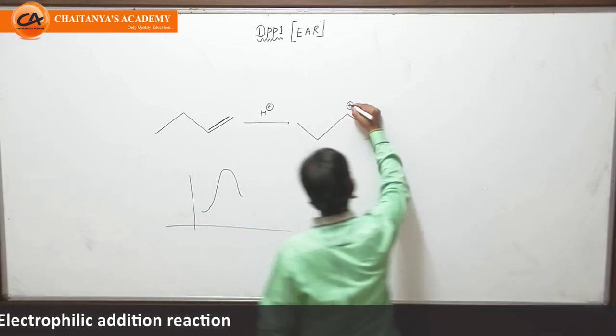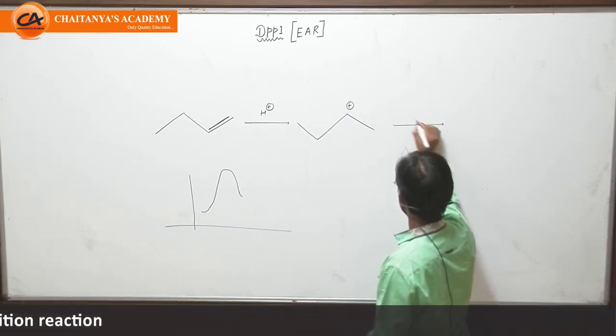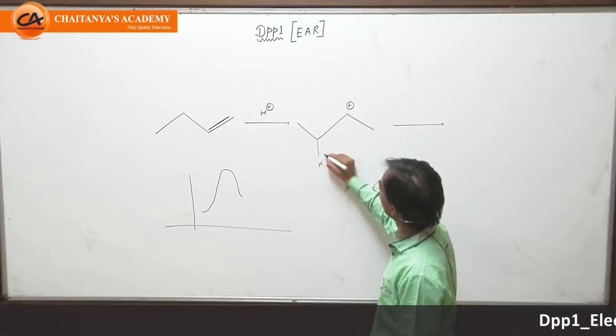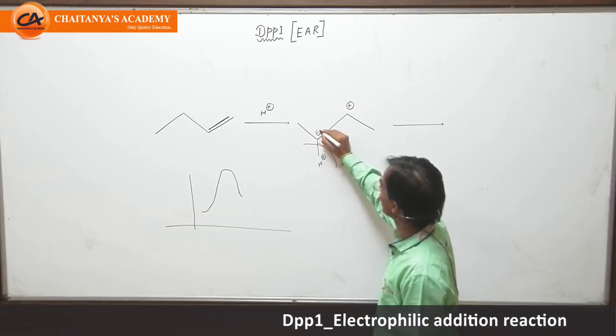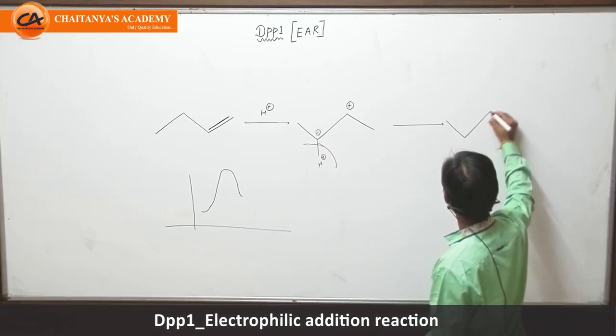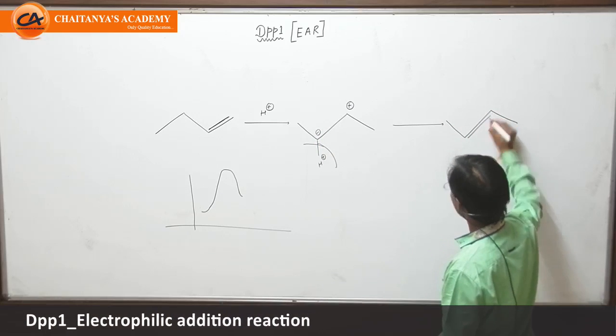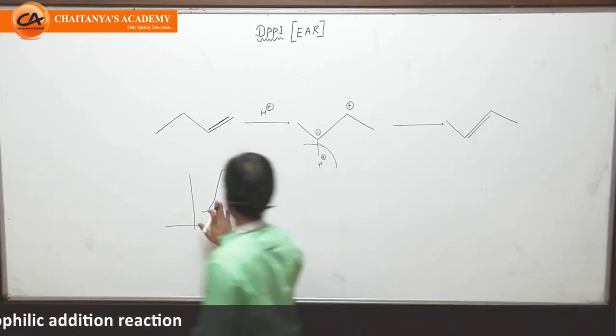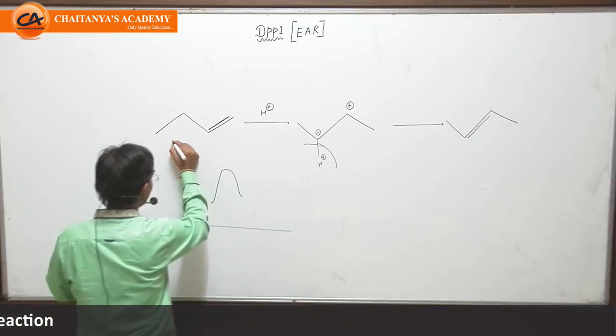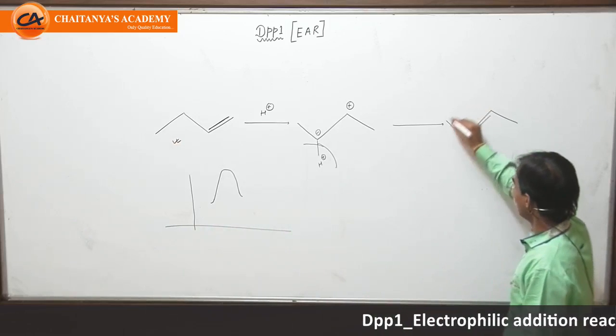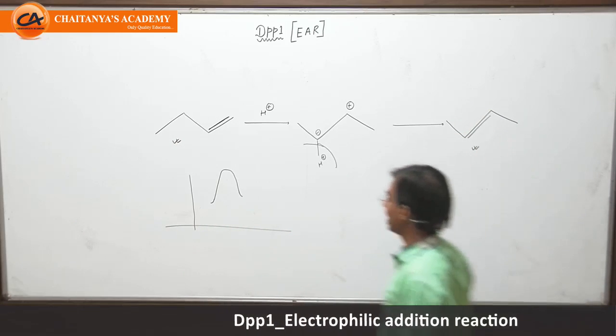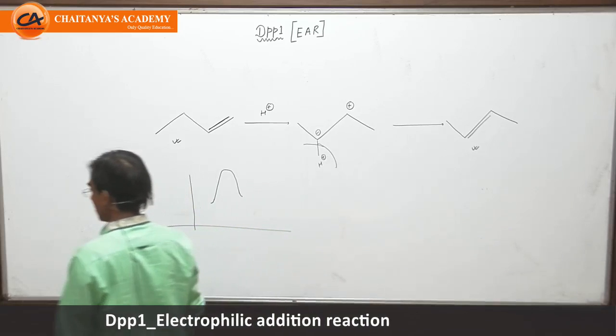Now this carbocation is losing one of the H plus and generating a negative charge, and finally what you are getting is this alkene. So students, if you compare this alkene and this alkene, this alkene has more stability and hence less energy. Is it clear?